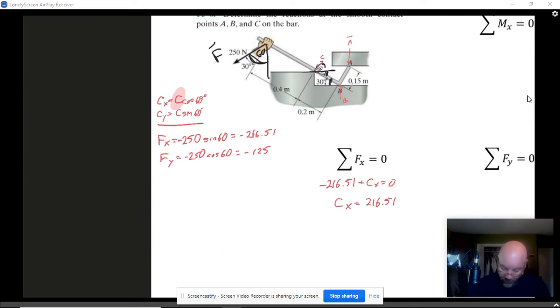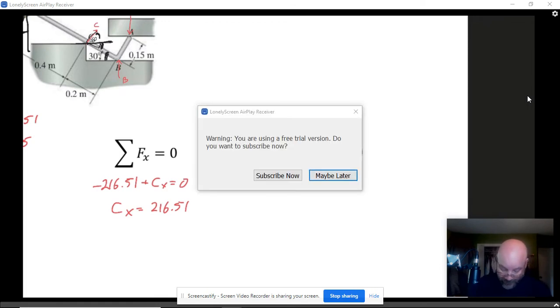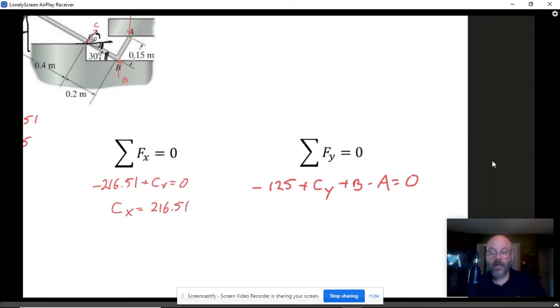Let's scoot over to our Y components. We've got the FY and that's down at 125, and our CY is up and B is up and A is down. I've got one of those situations again where I've got multiple unknowns. I don't know B, I don't know A. CY I can know because thankfully I've got CX. CX is going to lead me to C, so then I got CY.